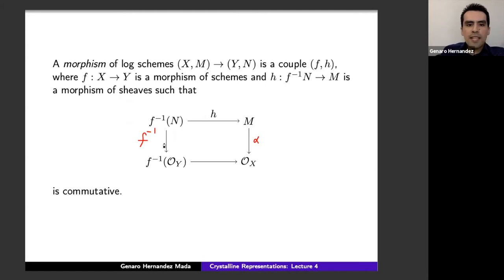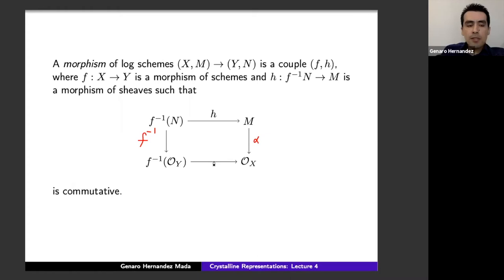We define the category of log schemes. A morphism of log schemes is a pair (f, h) where f is a morphism of schemes from X to Y, and h is a morphism of sheaves from the inverse image of N to M, making the relevant diagram commutative. Just as in the category of schemes we can talk about smoothness, we can also talk about smoothness in the category of log schemes.